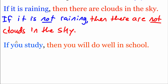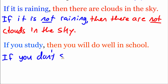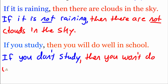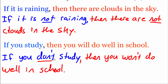Looking at this next one — same thing. It says 'If you study, then you will do well in school.' We're going to negate this. So: 'If you don't study, then you won't do well in school.' There's the inverse of that statement because we added a couple of negating pieces — the 'don't' and the 'won't.'